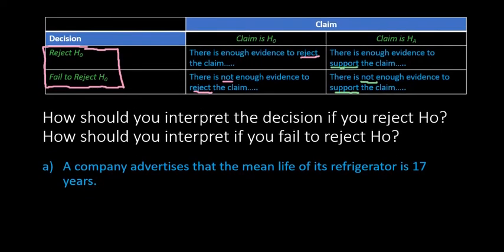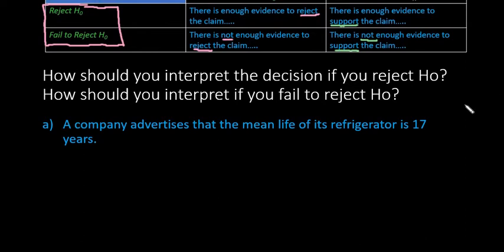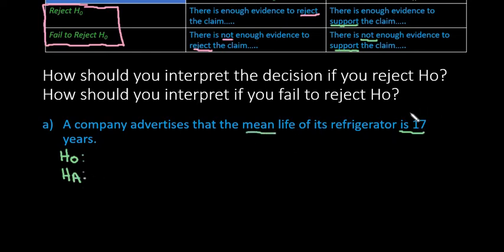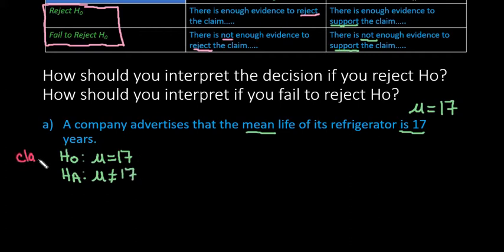Let's do a couple of examples so you can see this in action. For the first one: how should you interpret the decision if you reject the null hypothesis, and how should you interpret if you fail to reject the null hypothesis? Our claim is that a company advertises that the mean life of its refrigerator is 17 years. I advise setting up the null and alternative so you know what you're talking about. Since it is 17 and we're using the word mean, we would use mu equals 17. Since this is a statement of equality, we put it in the null hypothesis, and the alternative would be mu is not equal to 17. This is our claim because it is an equality statement.